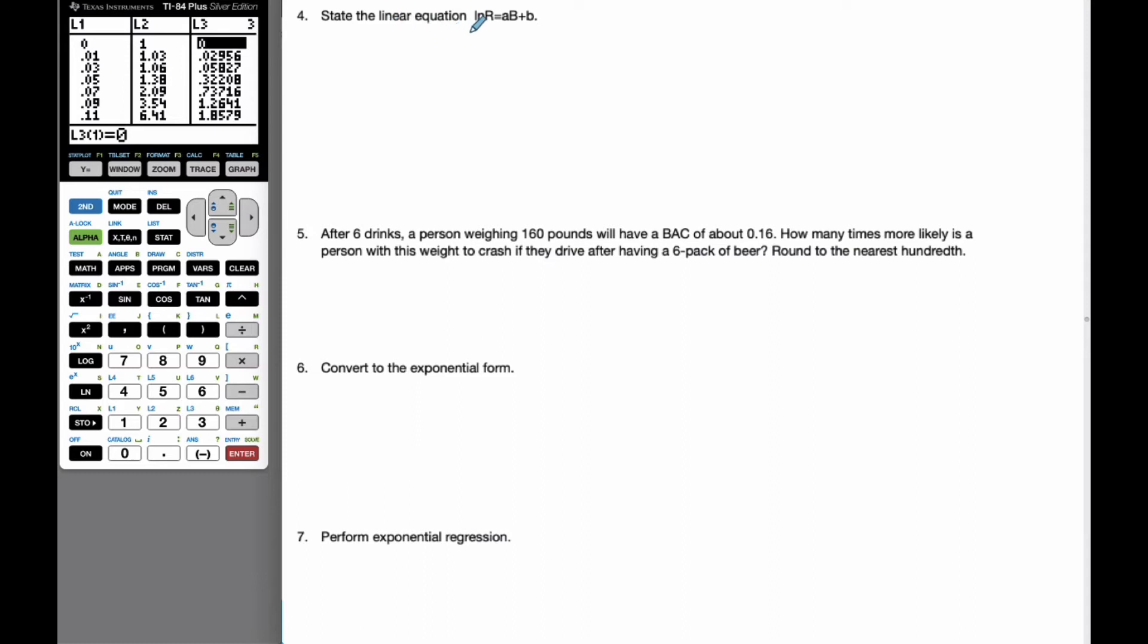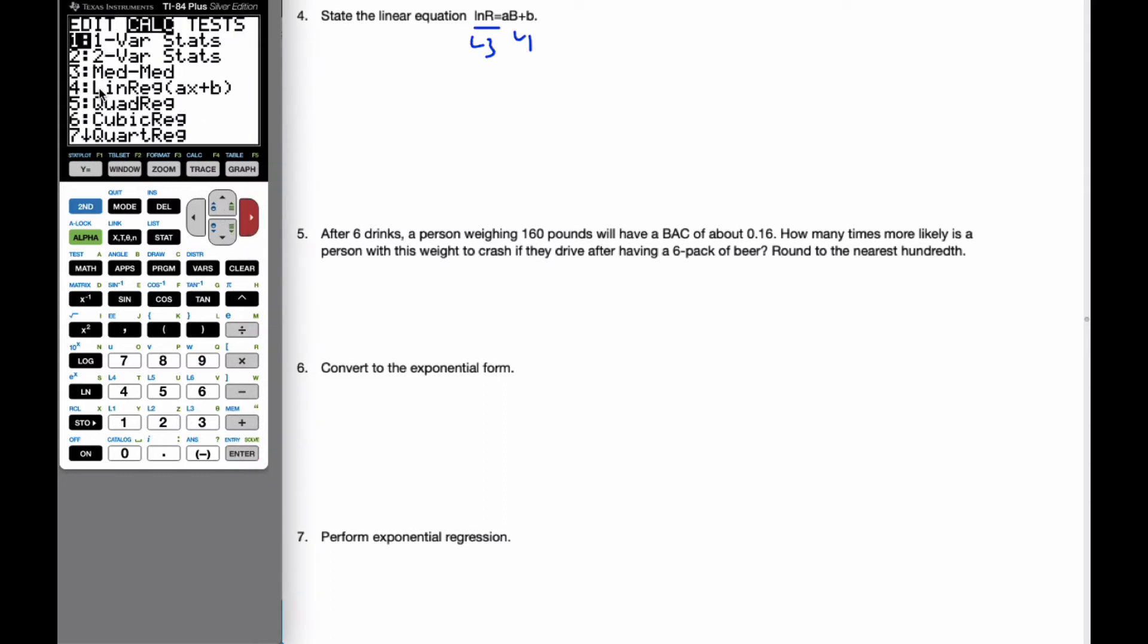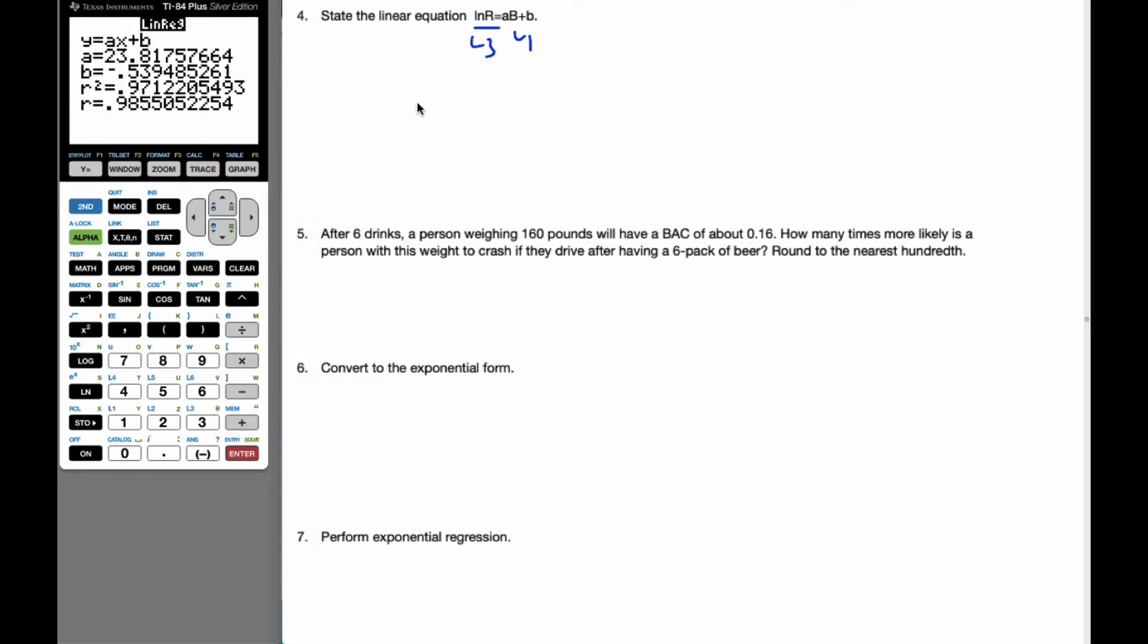So now I'm going to state the equation of natural logarithm of R. This is a linear equation. And so I know I'm going to use L3 and L1. And so if I go statistics, I'm going to calculate linear regression, number 4. But I'm going to have it with L1 as my X, and I want L3 to be my Y. And we'll put it into the regression equation of Y1, in case we need it for later. And hit enter, and now I can say that ln(R) is equal to 23.8B minus 0.539 to 3 significant figures.